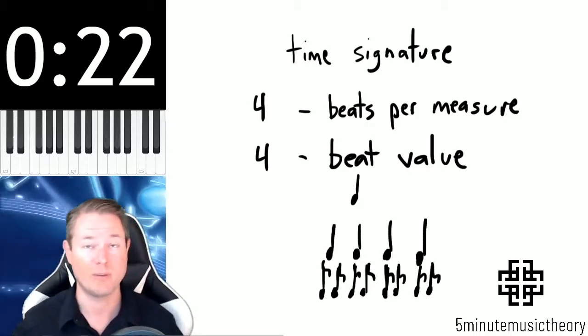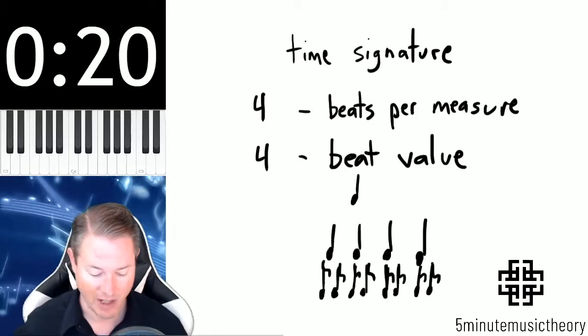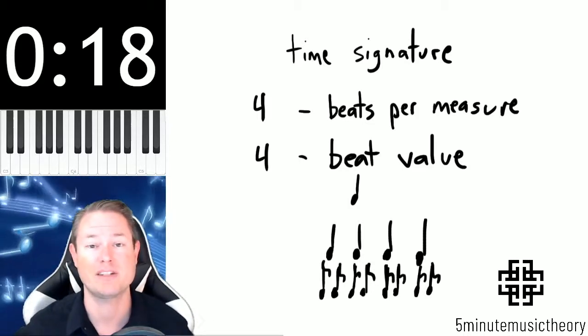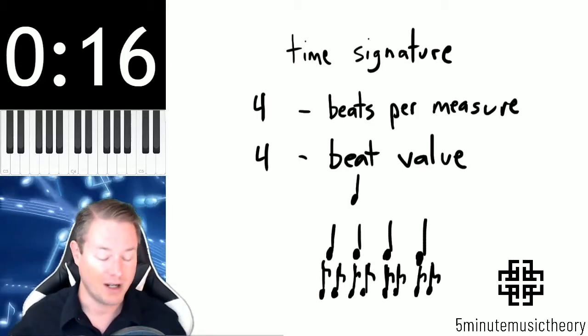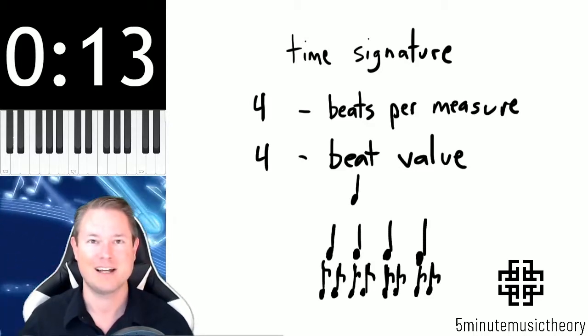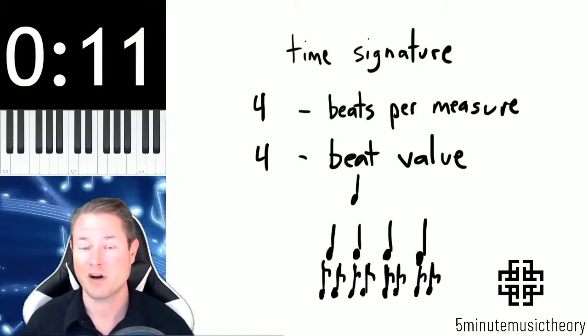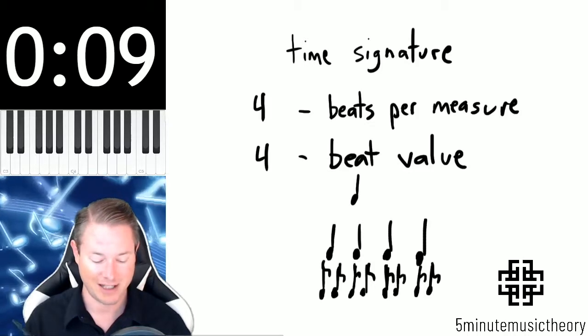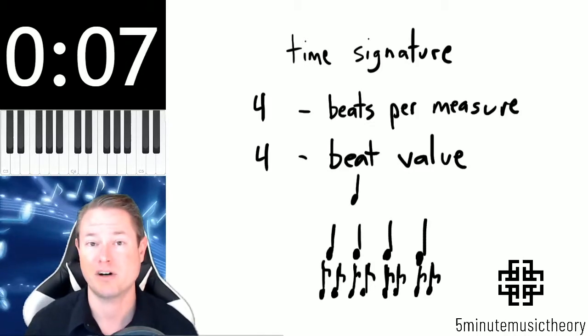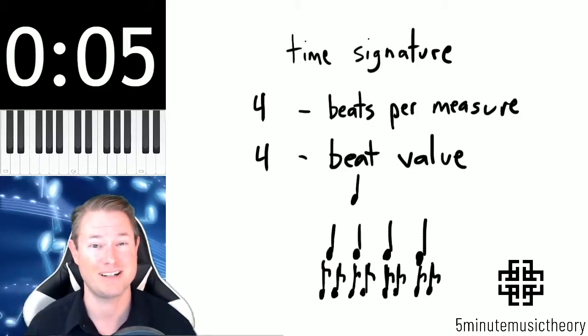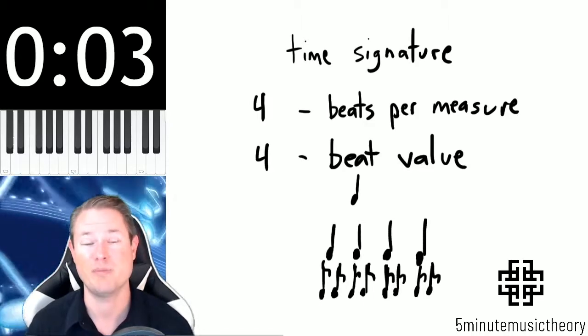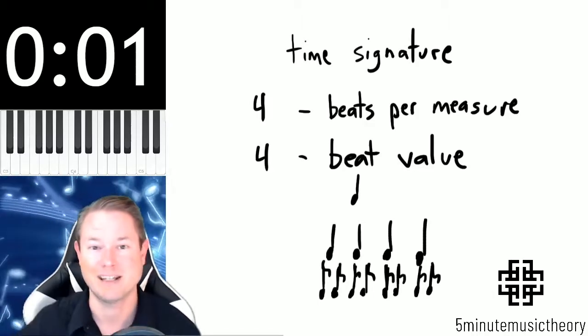And then in compound meter it's a little bit more complicated, hence the name compound. So basically, just to quickly summarize a simple meter and time signature here is that meter is a recurring pattern of strong and weak beats, and then the top number indicates how many beats there are in each measure, and the bottom number, just as a denominator in a fraction, tells you what the beat value is.